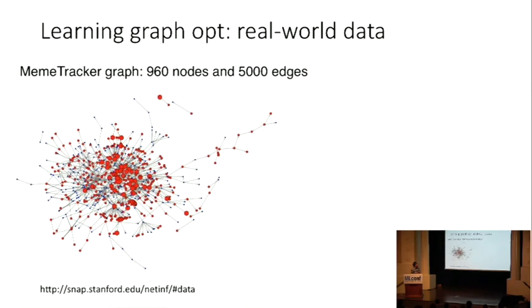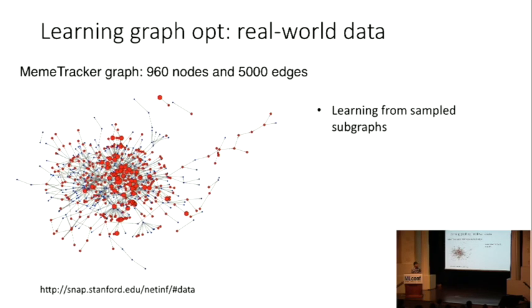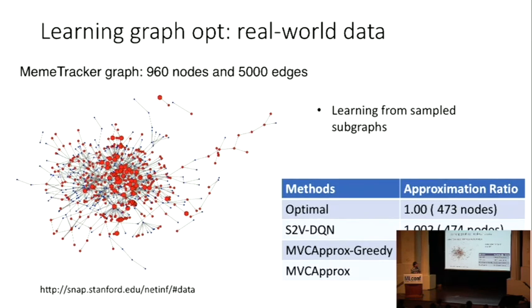We can also apply it to real-world data. For example, this is data taken from the Stanford website. It's a meme-tracker graph. We sample some subgraphs, learn from them, and generalize to the entire network. Our solution will only pick one more node comparing to the best optimal solution.